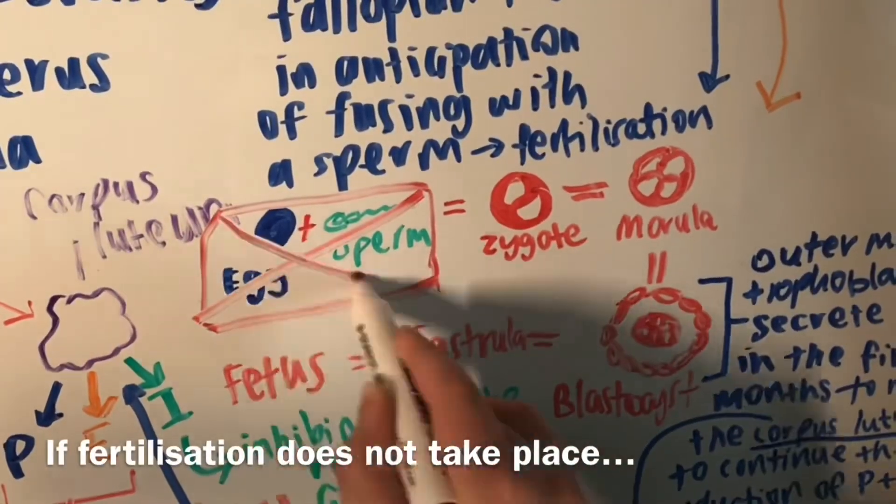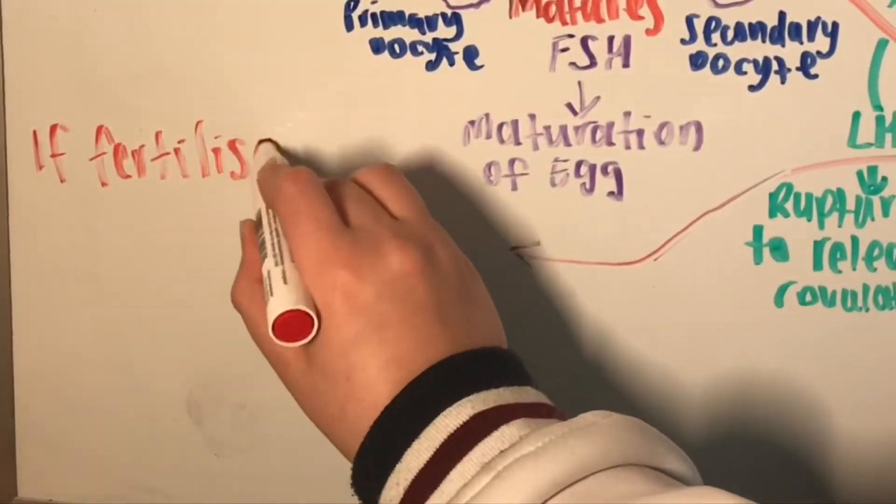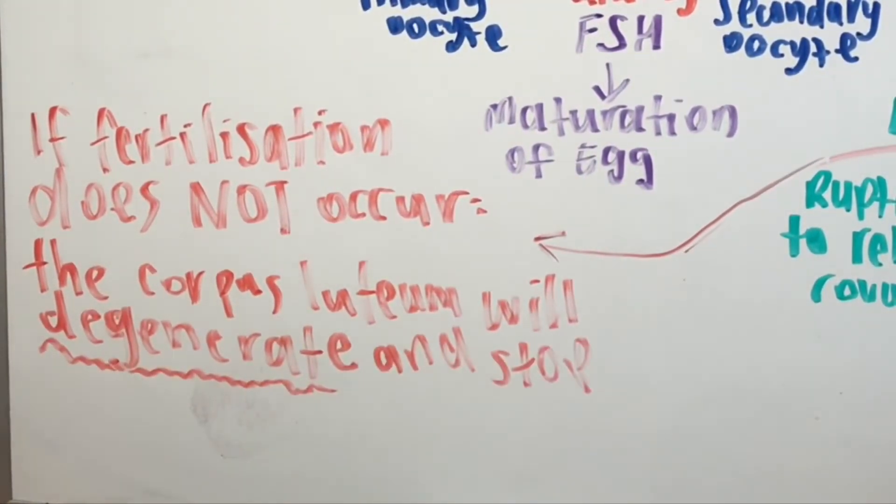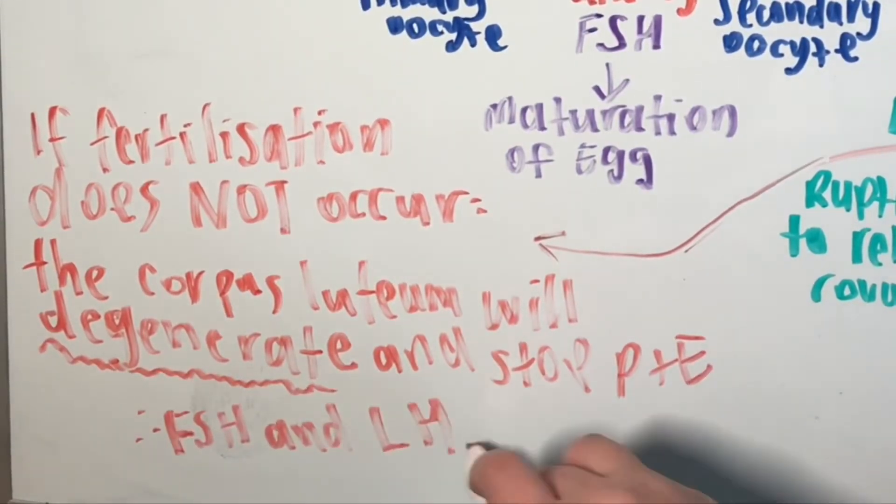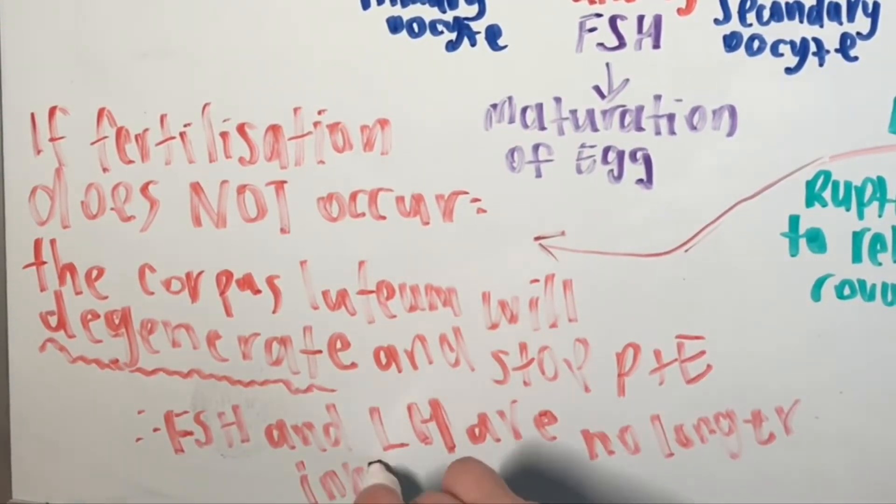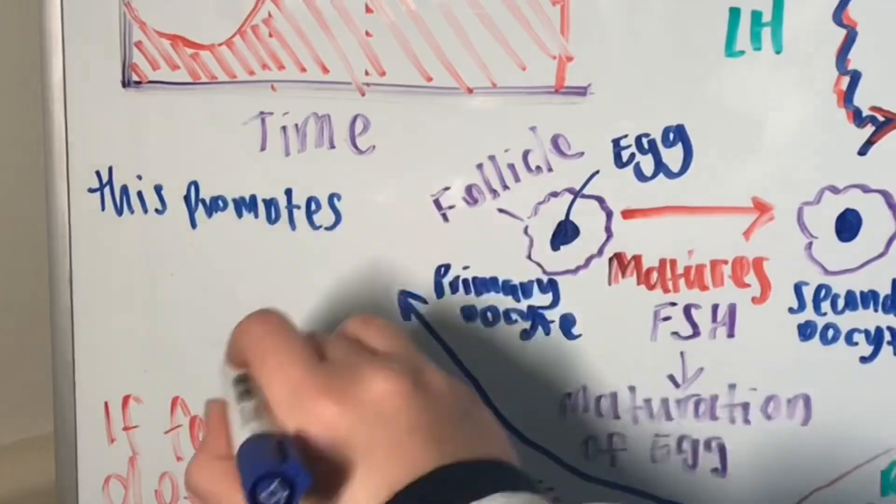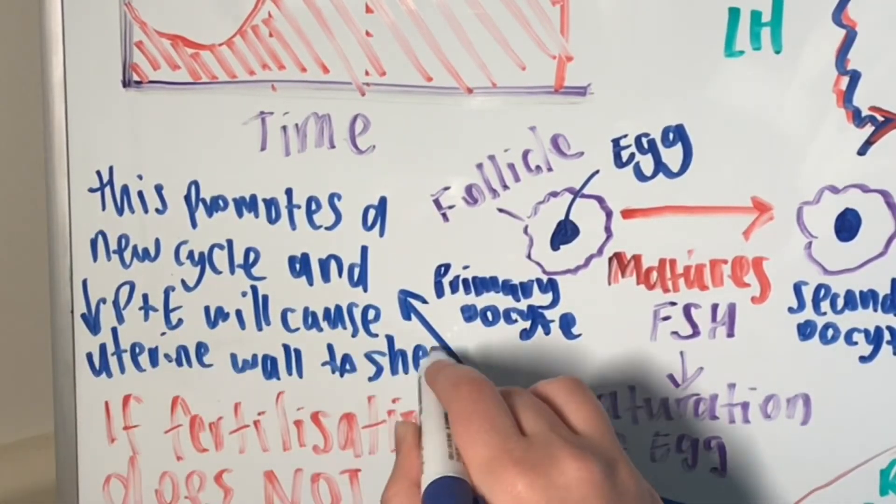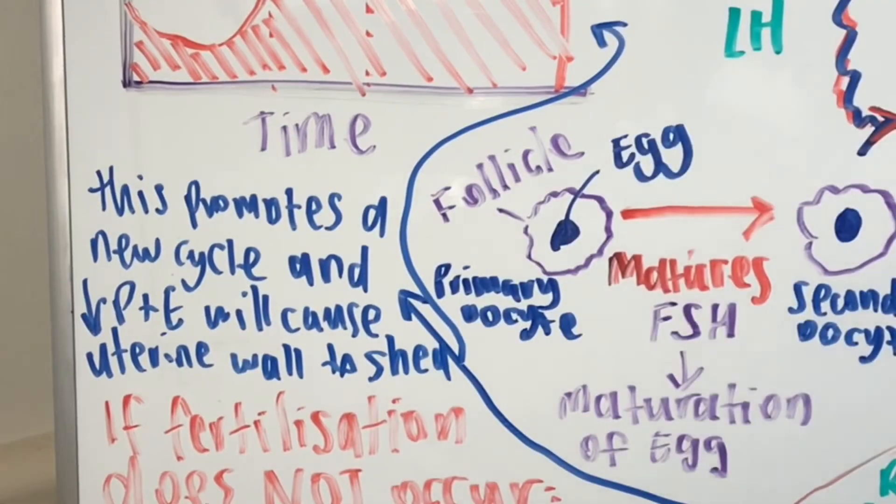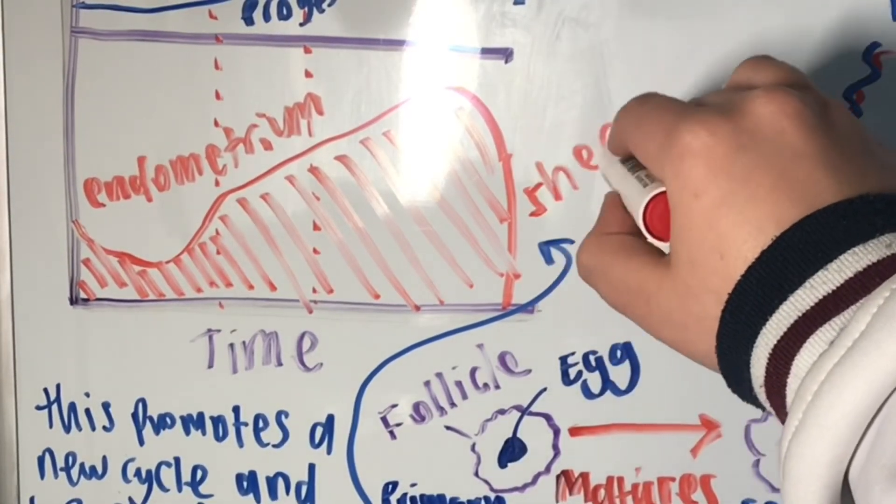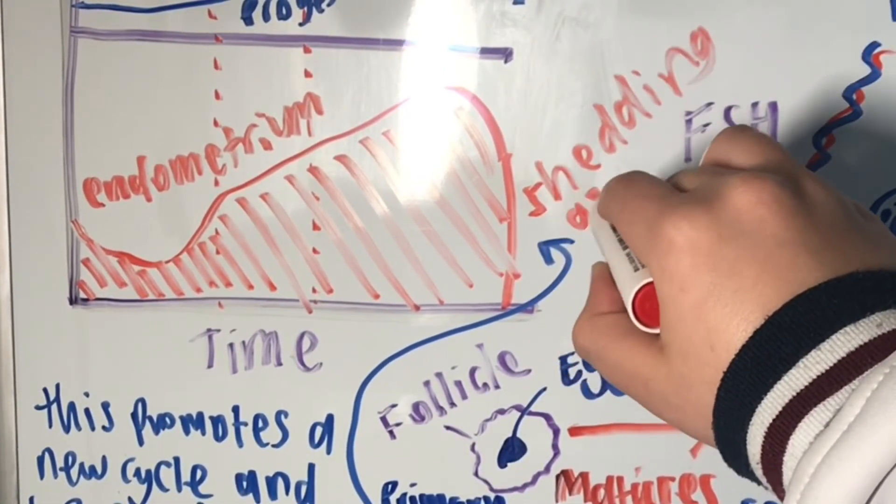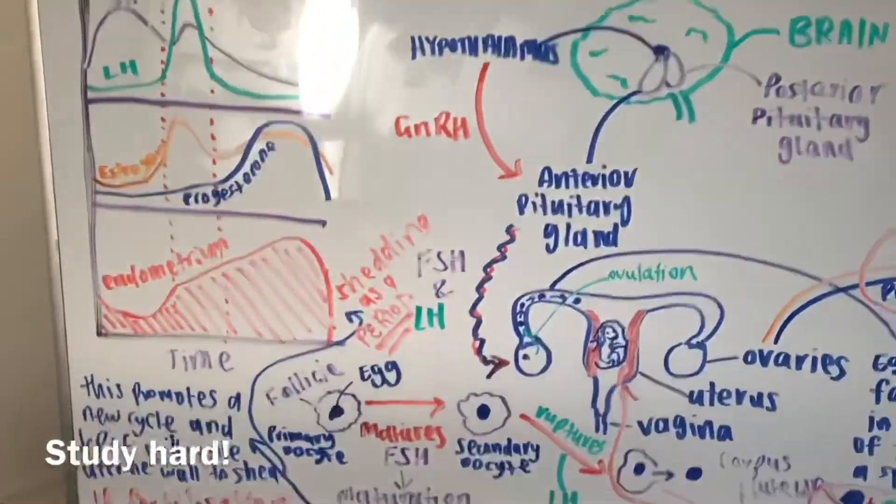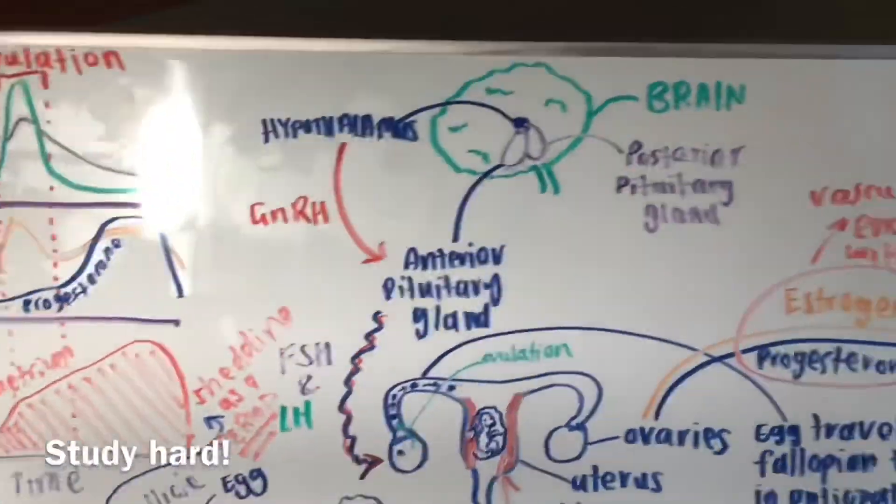However, if fertilization does not occur, the corpus luteum will degenerate and no longer produce progesterone and estrogen which causes FSH and LH to no longer be inhibited. This promotes a new cycle and the decrease in estrogen and progesterone also stops the growth and maintenance of the endometrial lining, hence it sheds and is released as a period. And that is the simplified explanation of menstruation and pregnancy.